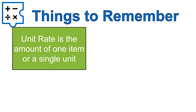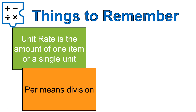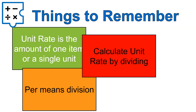A couple of things to remember: unit rate is the amount of one item or a single unit. "Per" means division, and you calculate unit rate by dividing. I hope that lesson was helpful for you. Make sure to check out the Simplify Academy lesson — I'll have the link in the video description. Have a wonderful day!